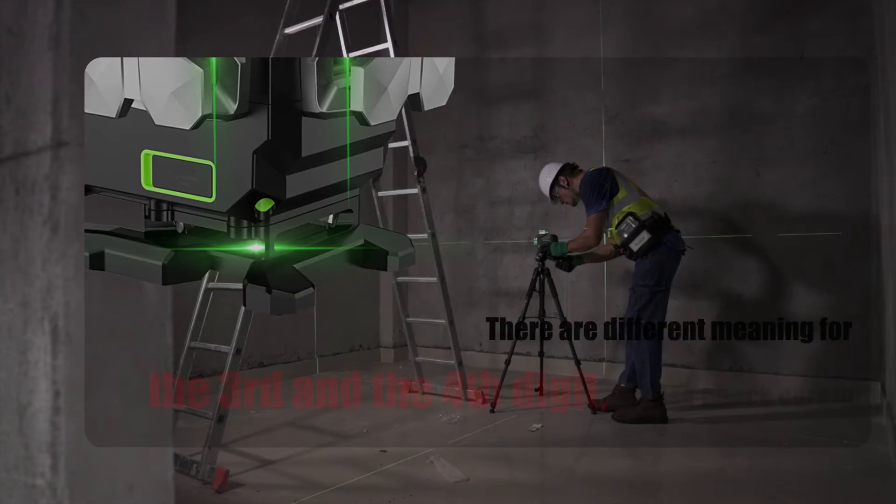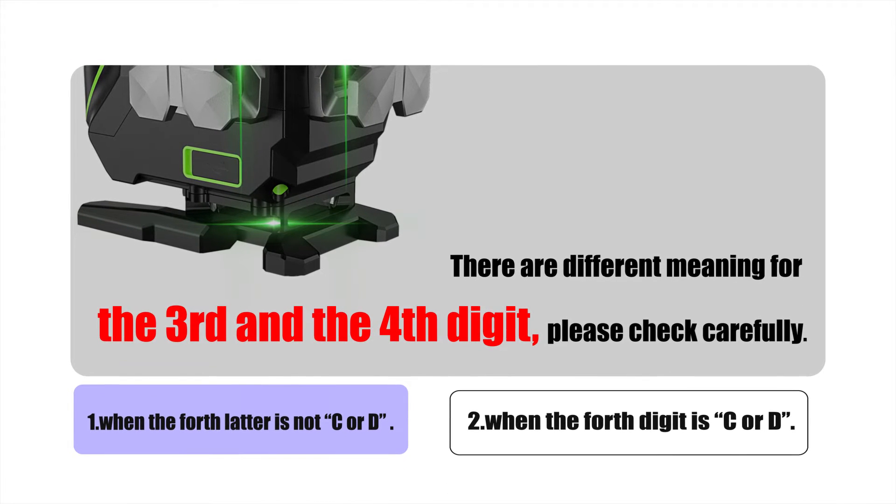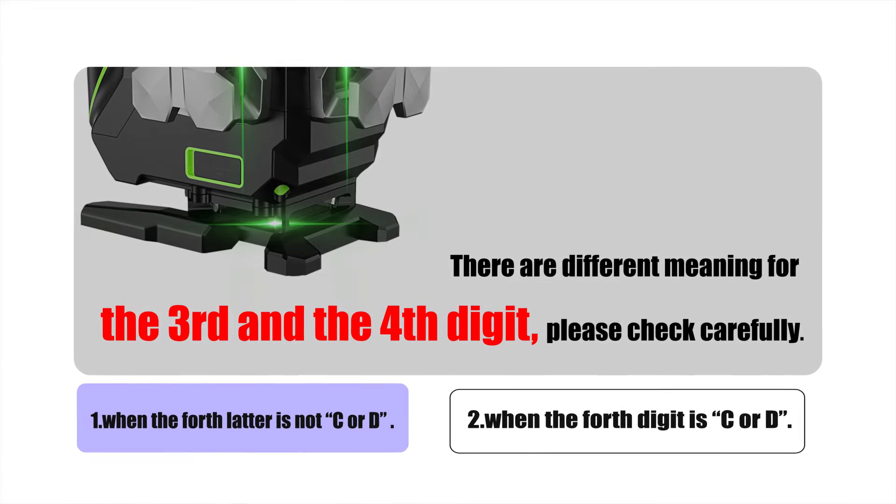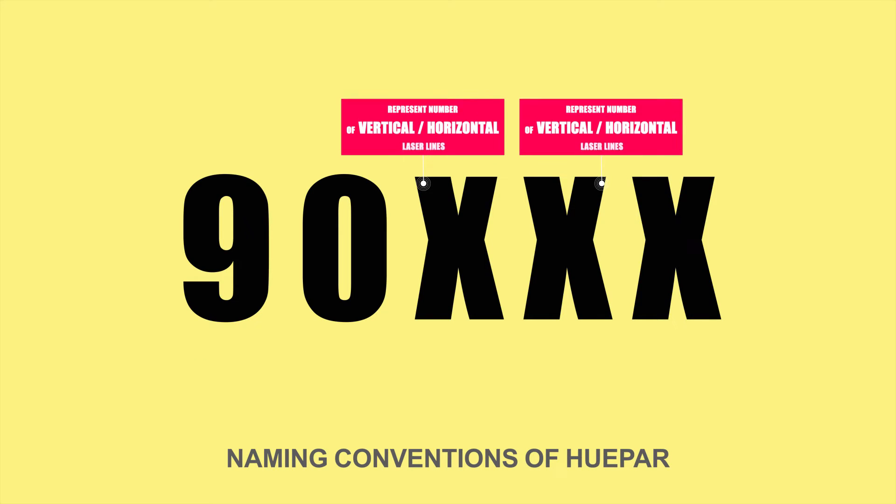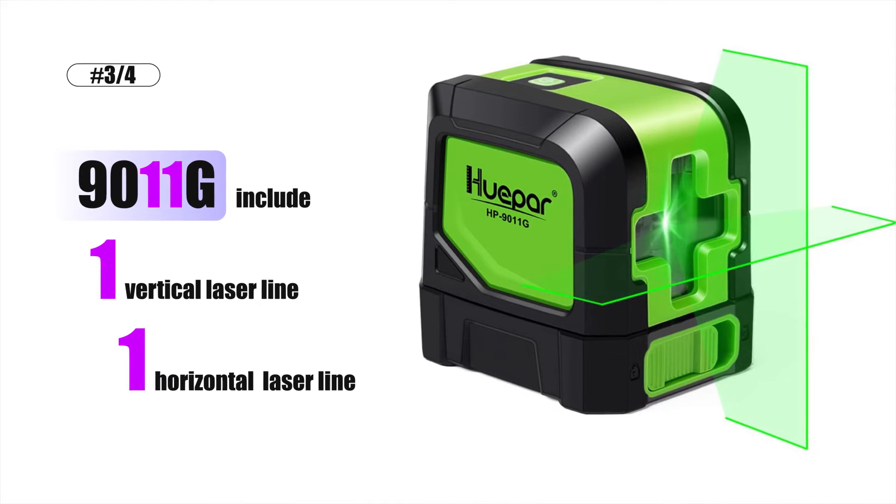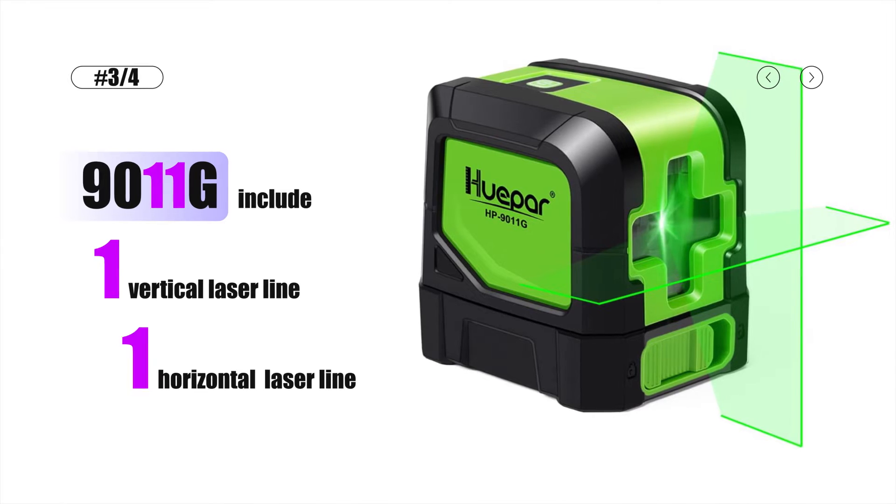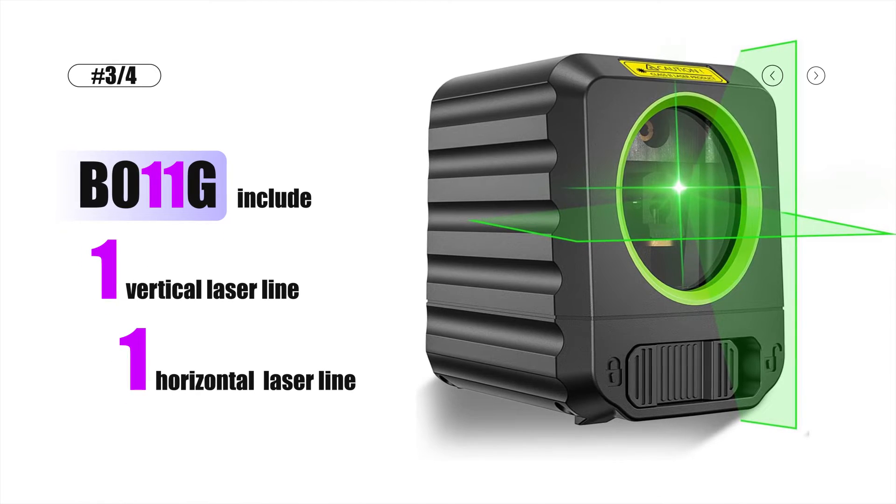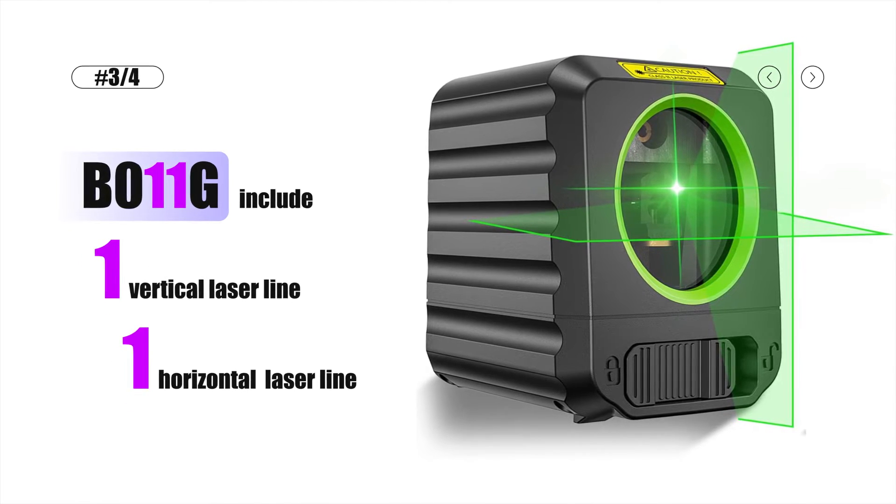There are different meanings for the third and the fourth digits. Please check carefully. The third and fourth letter represent number of vertical horizontal laser lines when the fourth letter is not C or D. For example, 9O11G include one vertical laser line. Same as BO11G, each have one vertical laser line.